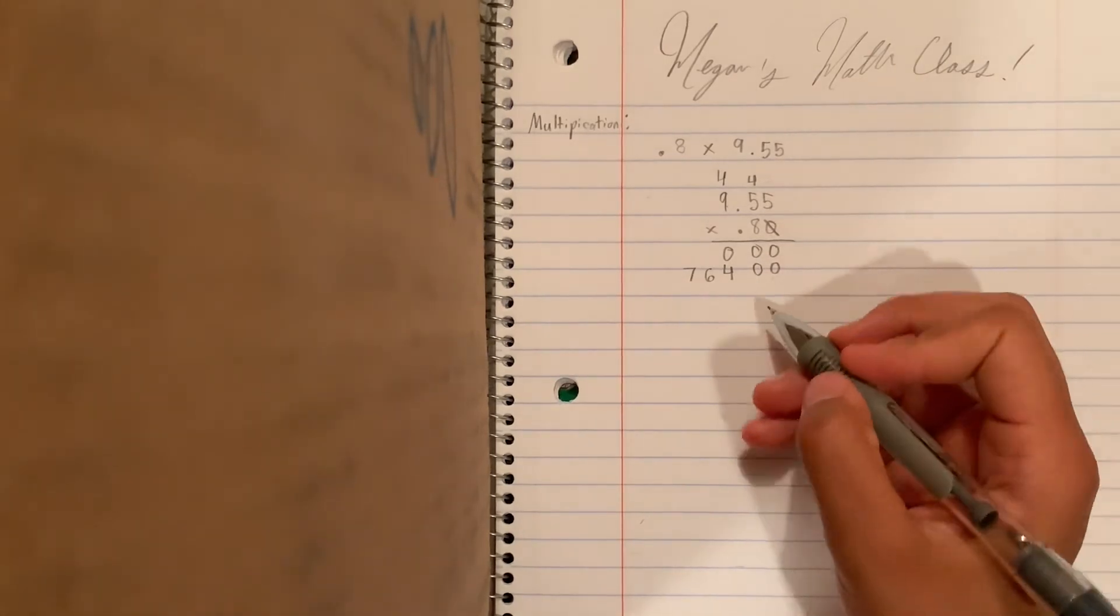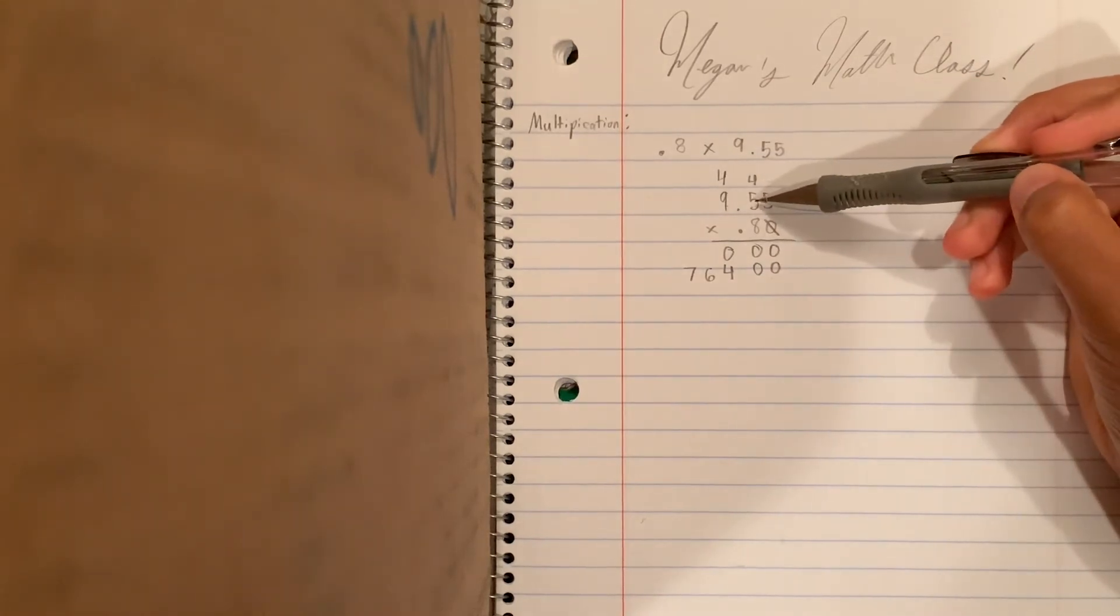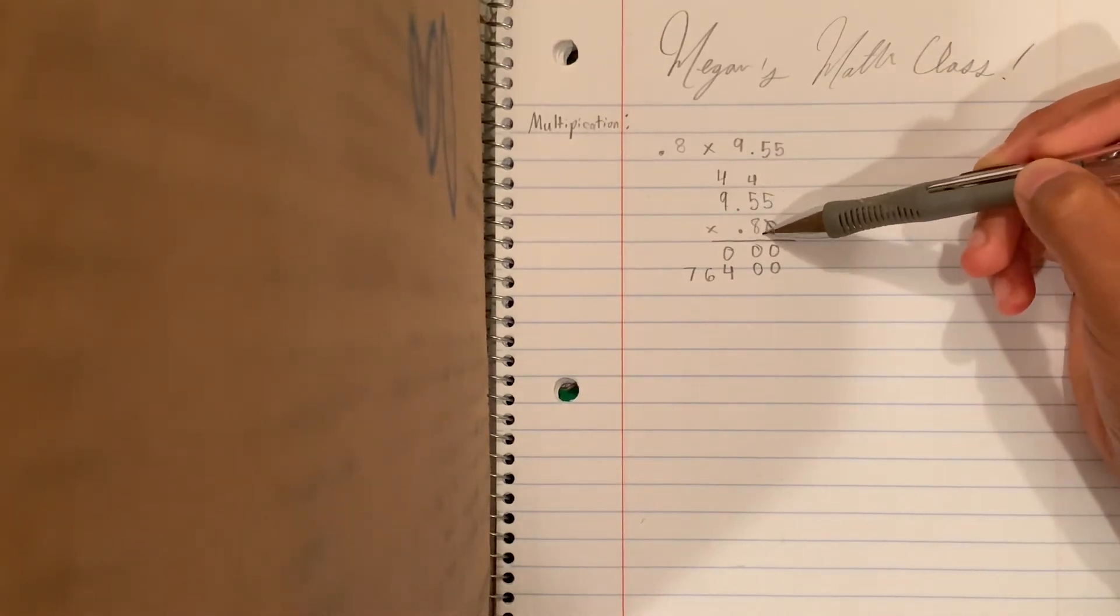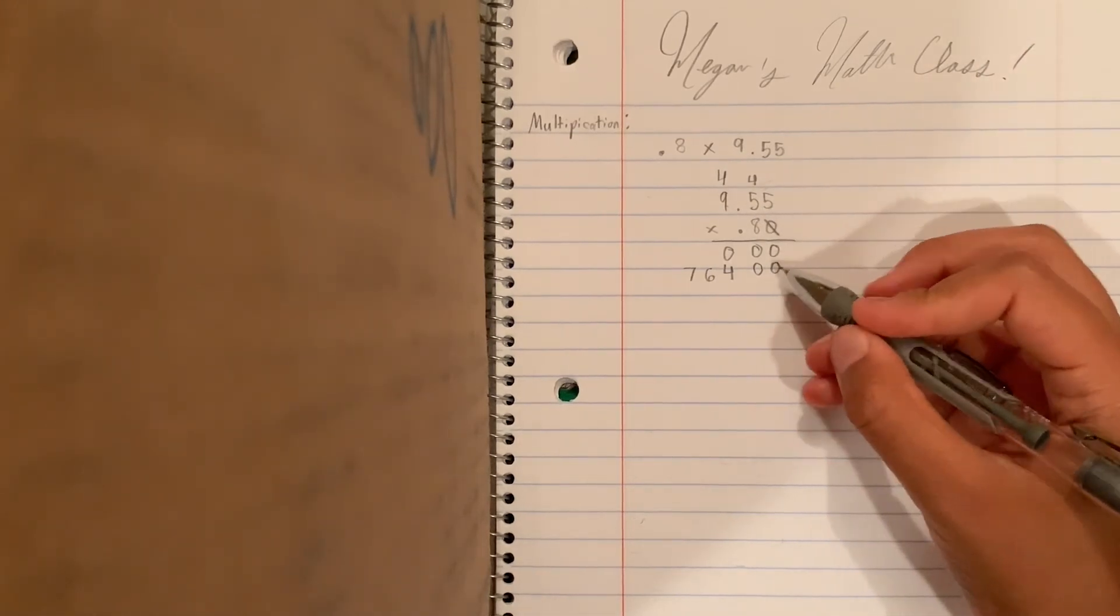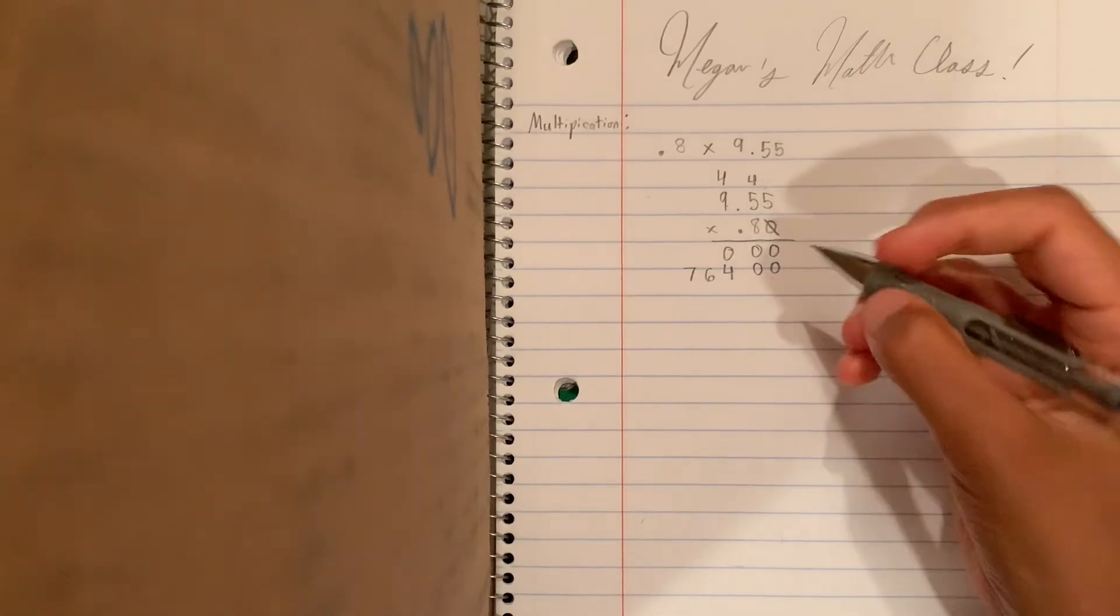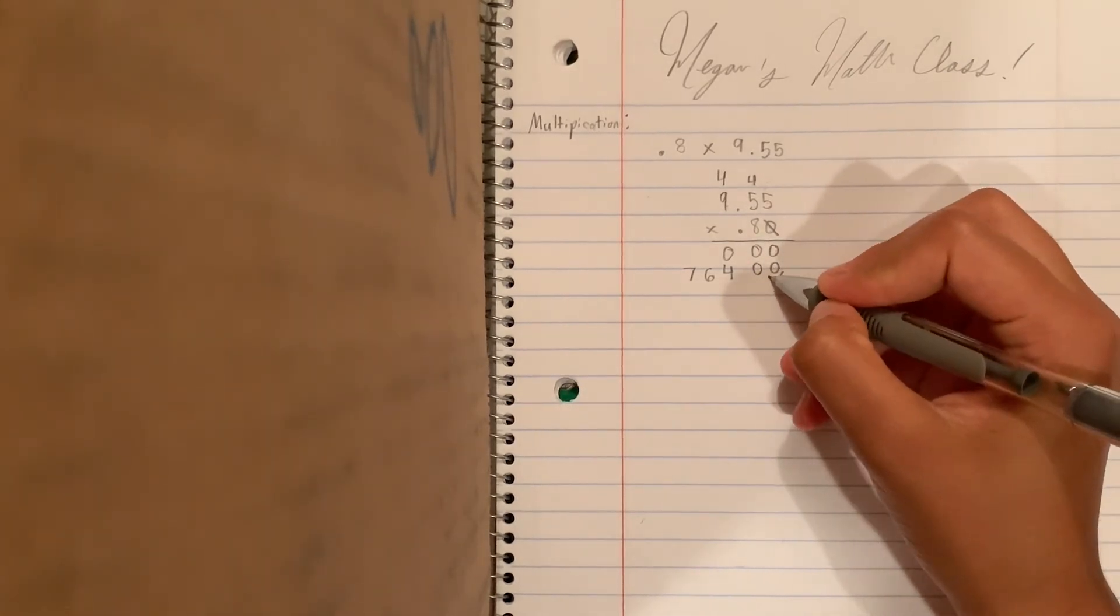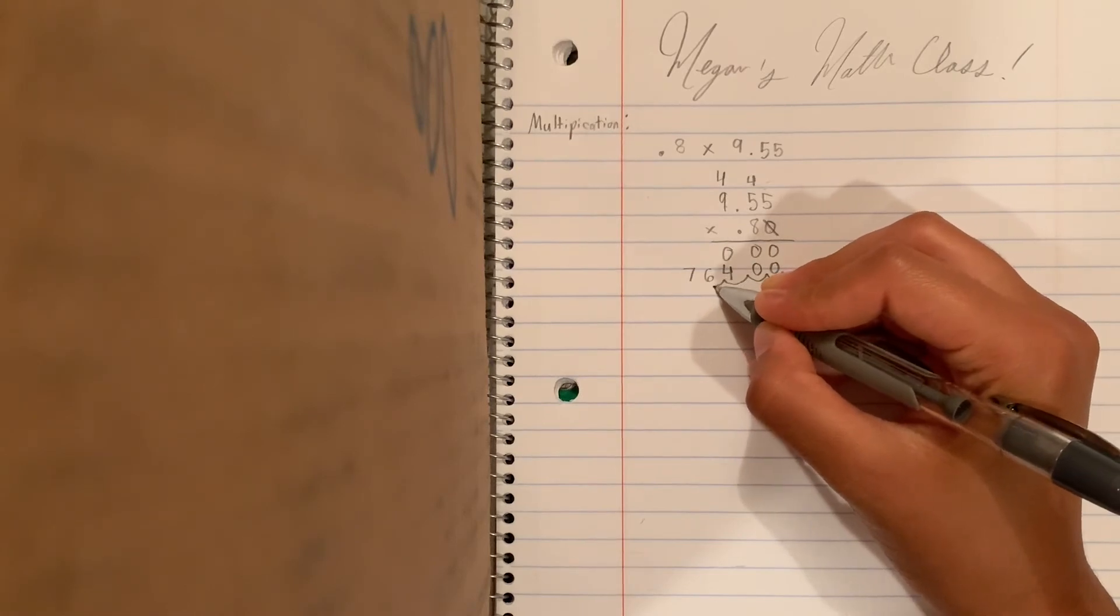So now, what we're gonna do is, we're going to count how many numbers are behind the decimal. And then we're gonna go up that many. So we're gonna go 1, 2, 3, 4. So we're gonna start over here. And we're gonna go 1, 2, 3, 4.